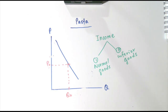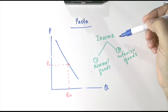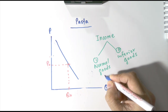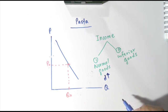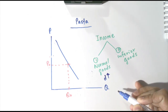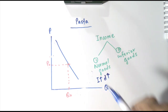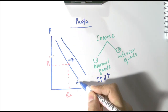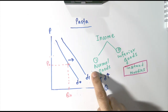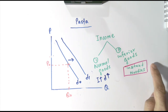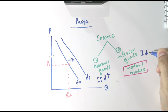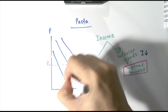The next determinant is income. If your income increases, your demand for normal goods will increase. Assuming pasta is a normal good, if your income increases, then the demand for pasta is going to increase — the demand shifts to the right from D0 to D1. Now let's look into inferior goods. If we classify instant noodles as inferior goods and your income decreases, obviously you'll be buying less pasta and your demand for pasta shifts to the left.